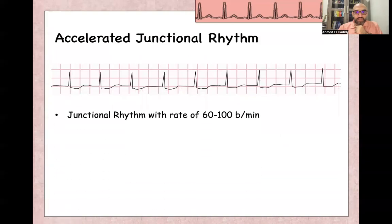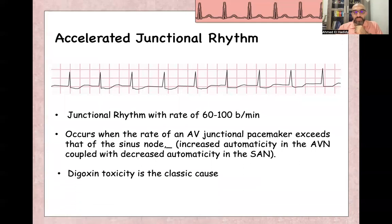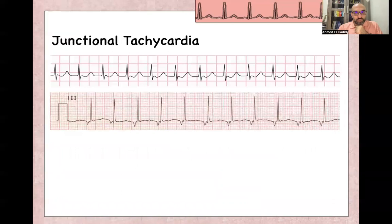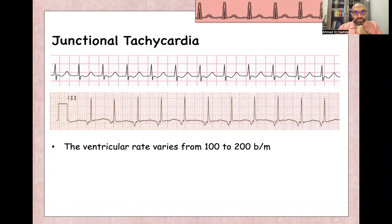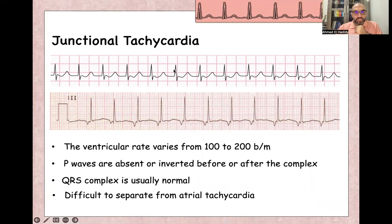Accelerated junctional rhythm is a junctional rhythm with a rate between 60 to 100. As you can see, you cannot clearly identify P-waves and it's narrow complex. Usually accelerated junctional rhythm appears when the AV node pacing rhythm exceeds that of the sinus node, meaning increased automaticity in the AV node and decreased automaticity in the SA node. It is a classic presentation in digitalis toxicity. Junctional tachycardia is when the rate is more than 100, with the same characteristics: narrow complex, P-wave inverted or following the QRS. It is difficult to differentiate between junctional tachycardia and some types of atrial tachycardia.